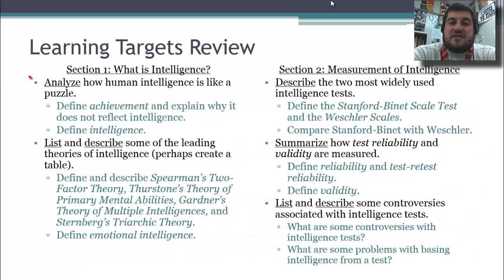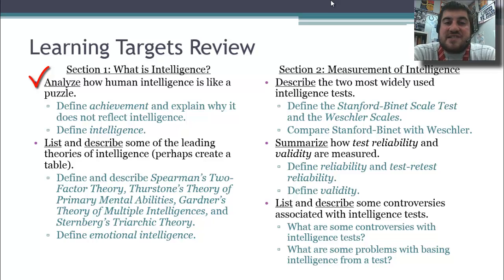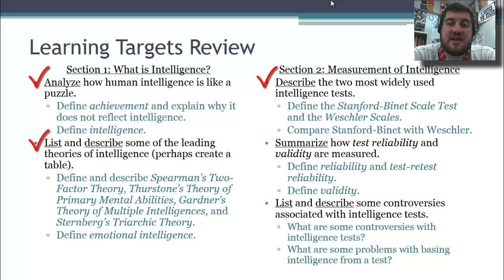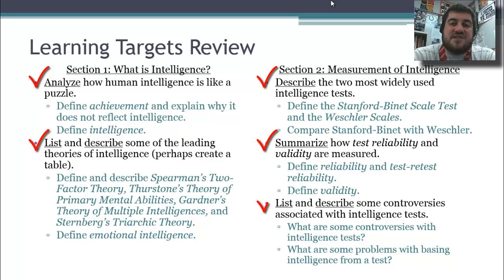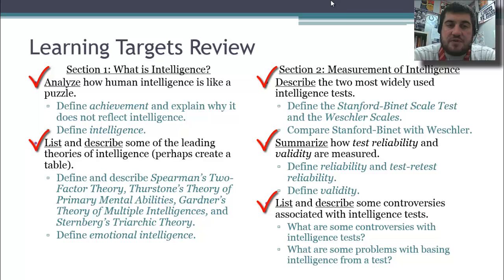Let's review. We talked about the differences between achievement and intelligence, discussed the four leading theories of intelligence and emotional intelligence, talked about the Stanford-Binet and Wechsler scales, covered how reliability and validity differ, and discussed problems and controversies associated with intelligence tests. Later in this chapter we'll discuss differences in intelligence and how heredity influences it. Fill out those learning targets, and I'll see you later. Goodbye.